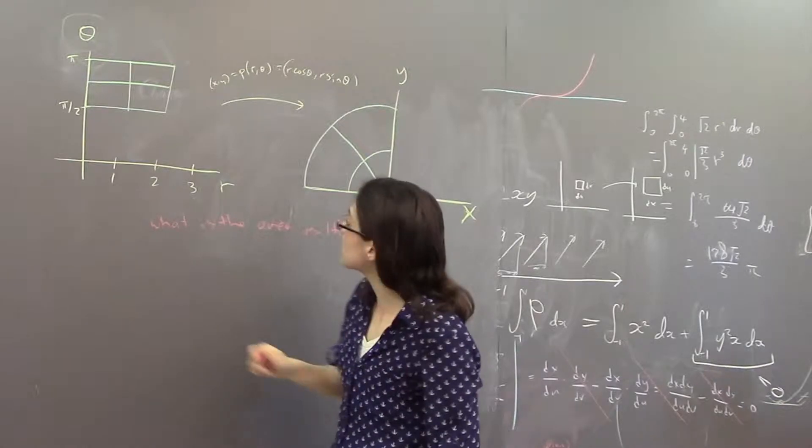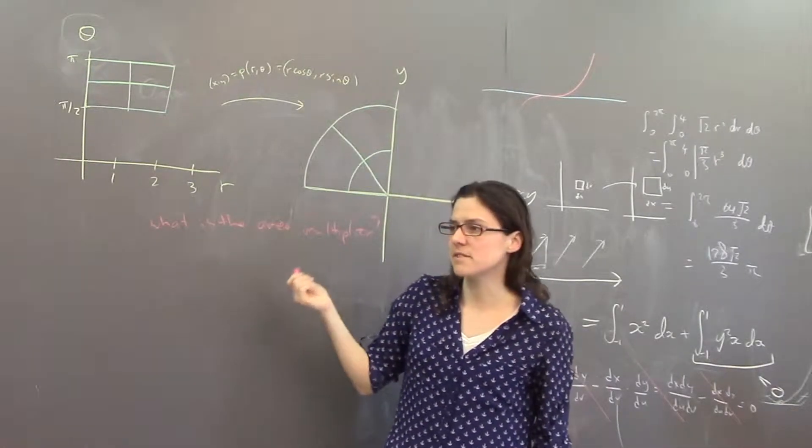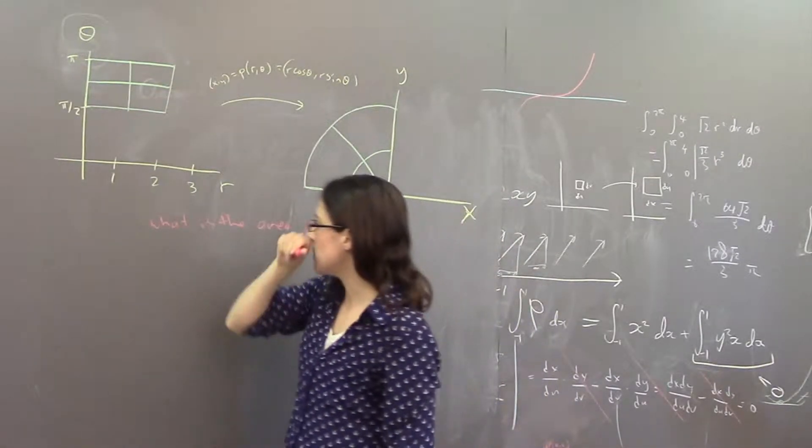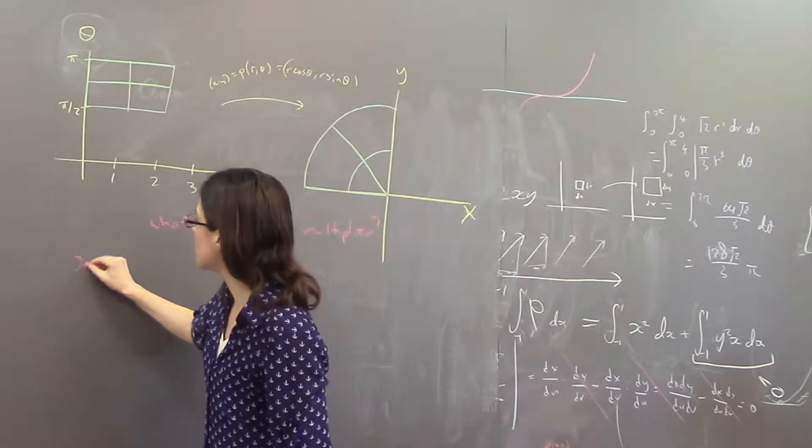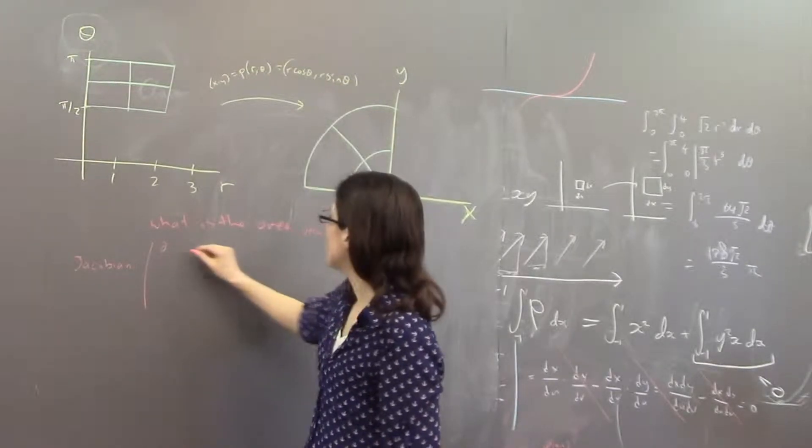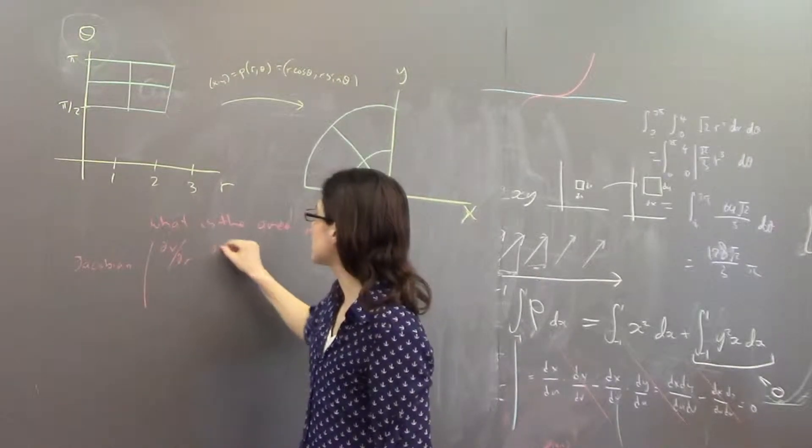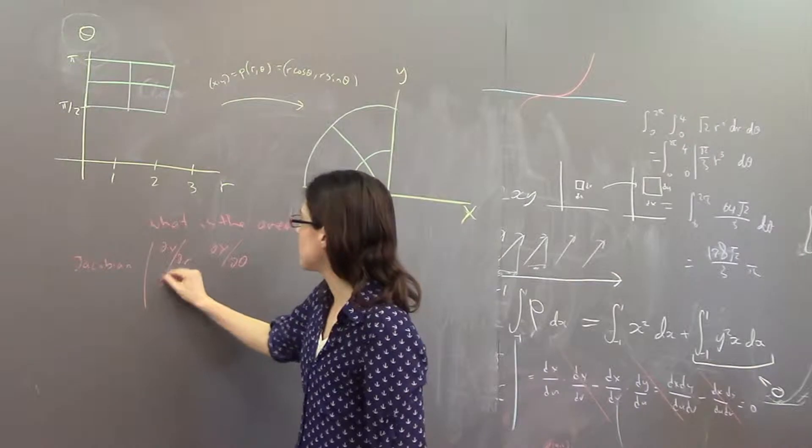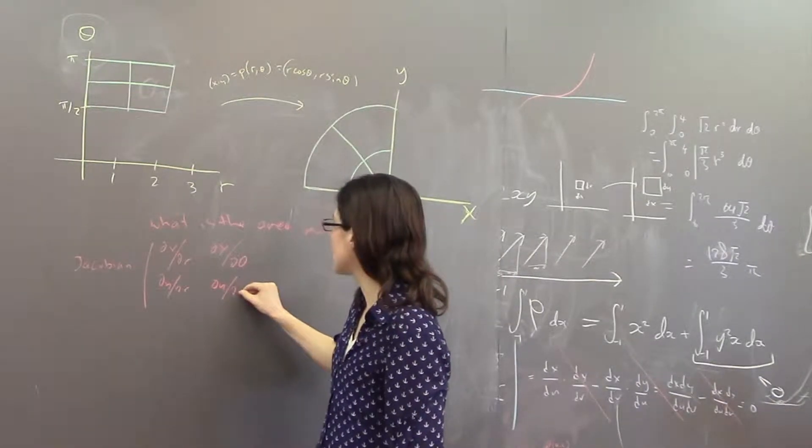We have figured out that that's the determinant of the Jacobian matrix. So the Jacobian matrix is partial of x with respect to r, partial of x with respect to theta, partial of y with respect to r, partial of y with respect to theta.